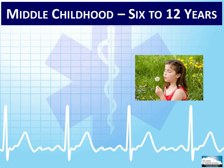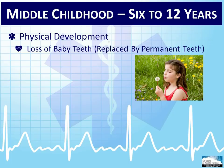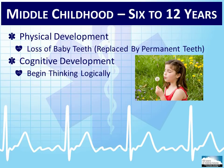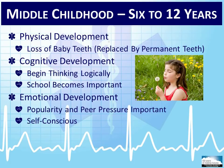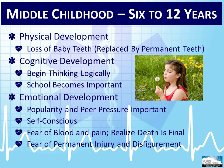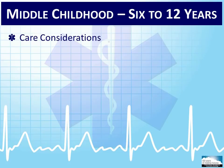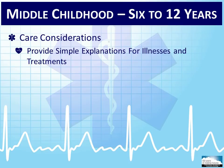In middle childhood, 6 to 12 years of age, physical development changes are observed with the loss of baby teeth and the eruption of permanent adult teeth. This age range is highly mobile and at higher risk of injury. Kids tend to begin thinking with greater logic, so they can communicate more effectively. School and friends become an important part of life, and popularity and peer pressure affect self-consciousness and self-esteem. They still like to have a parent nearby in an emergency, but independence starts to show. They are afraid of blood and pain and still fear permanent injury or disfigurement. When responding to an emergency for a child in this age group, try to provide simple explanations and provide a sense of control by giving the child a choice in the order of treatments if possible.